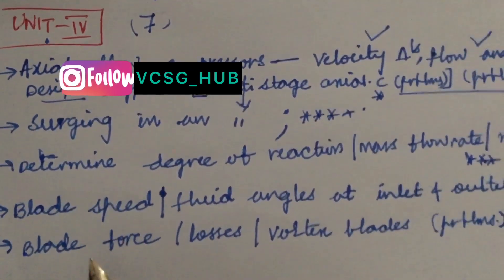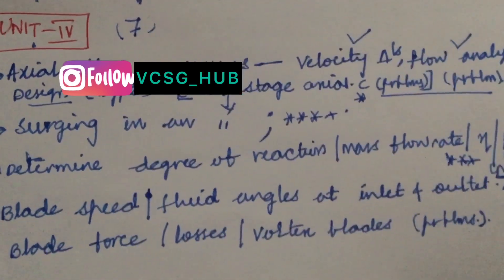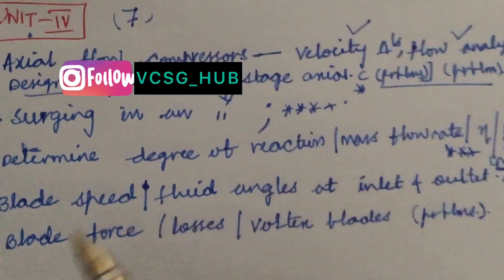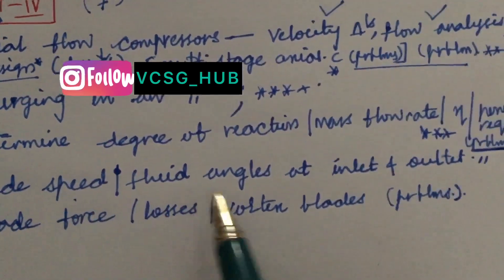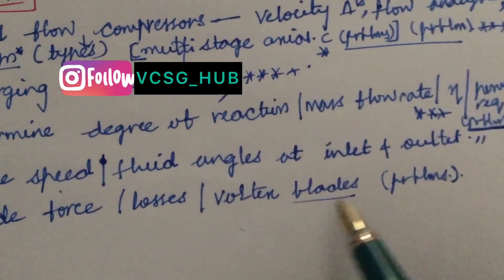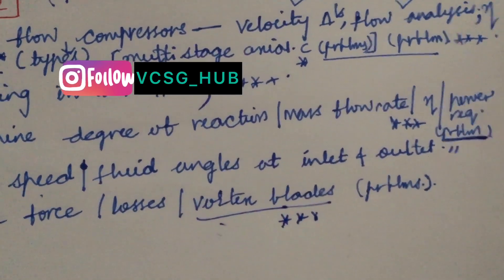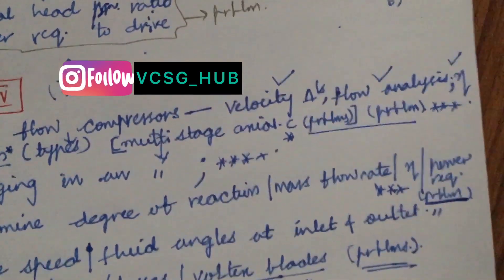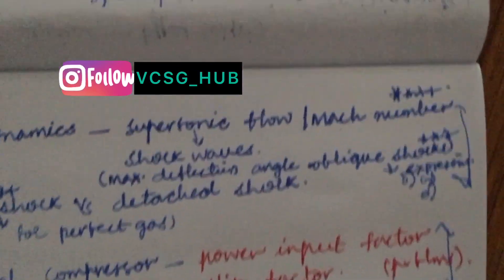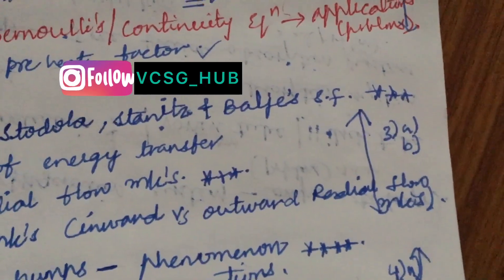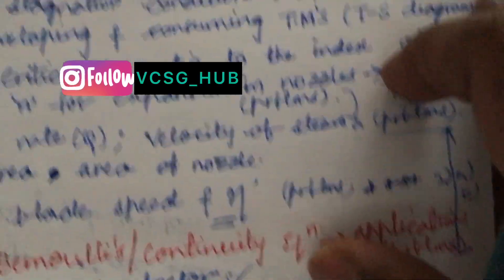Also, given velocities and pressure in the question paper related to axial flow compressors, they will ask you to find the blade speed, fluid angles at inlet and outlet, blade force, losses, and vortex blade problems. Make sure to work out the problems, failing which you cannot pass this course. You should have a strong foundational knowledge in each and every concept covered in this course on Turbo Machinery.